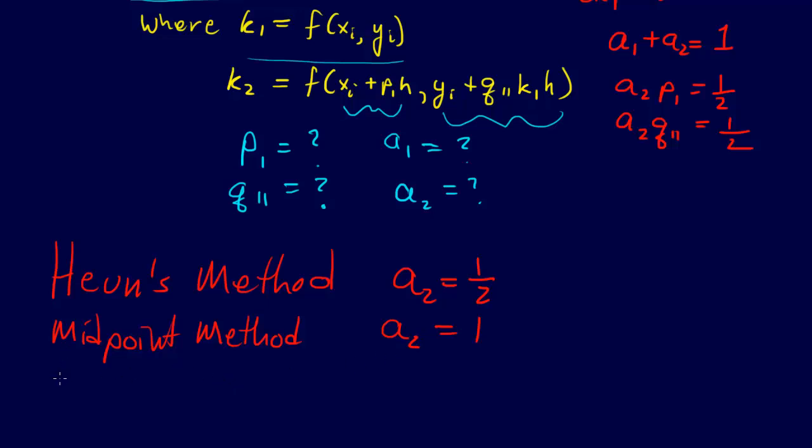So that's the other thing that we could do. And then the third thing we could do is called Ralston—I mean, we could do anything, right, but these are the three named methods. We got Ralston's method, and in Ralston's method, we set a2 equal to 2/3. And again, if we do that, we can solve for all of the other ones.